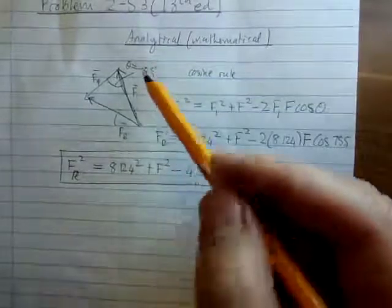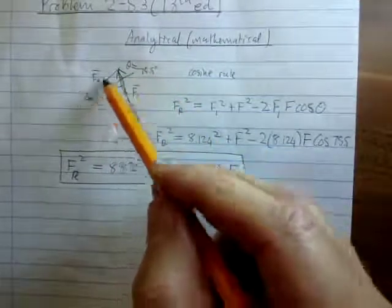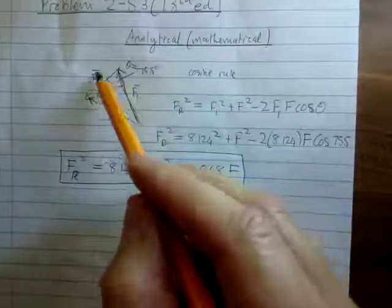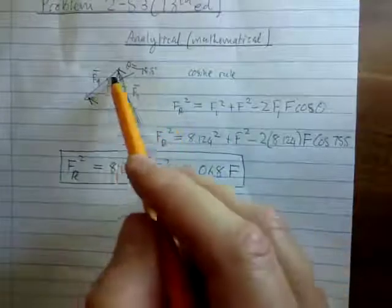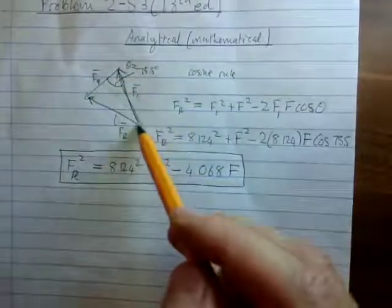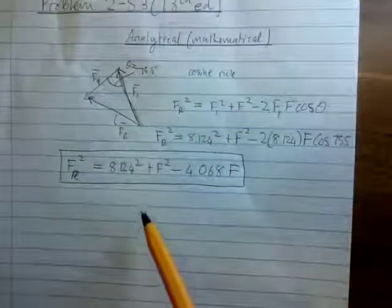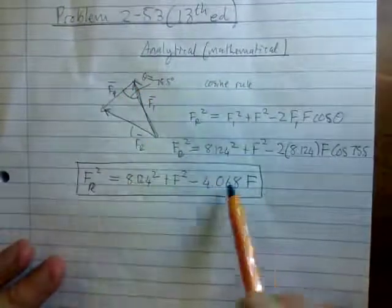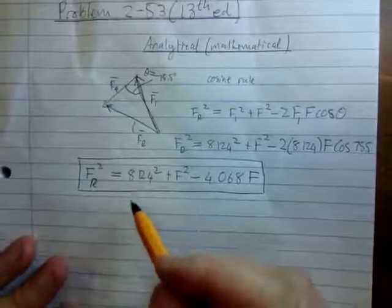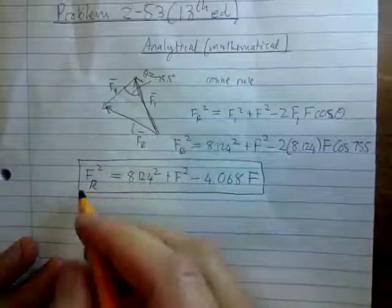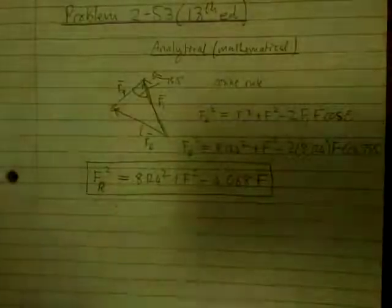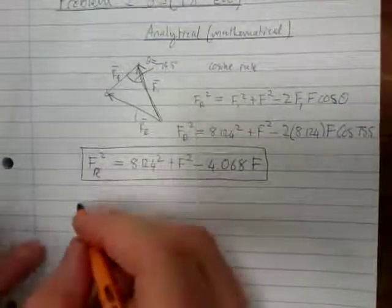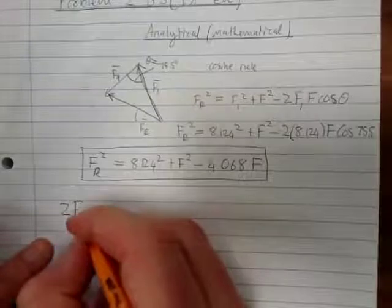Remember, what are we trying to do in this problem? We are trying to minimize — we are trying to find F, the magnitude of F, so that the magnitude of FR will be a minimum. What do you recall from maths? In order for us to find a minimum, we need to calculate the first derivative and set it equal to zero. The first derivative here would be 2FR times dFR/dF.